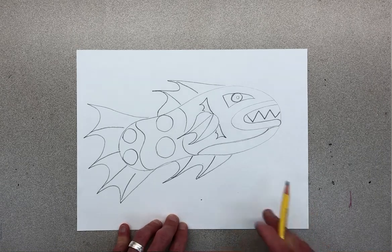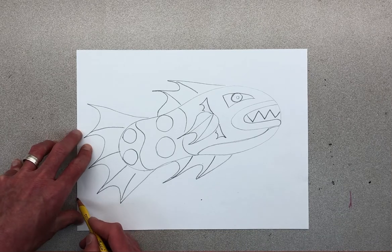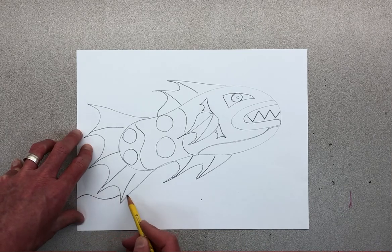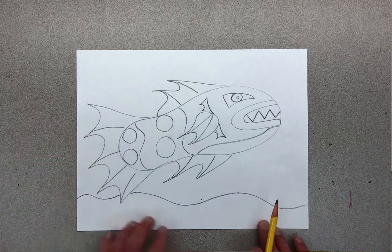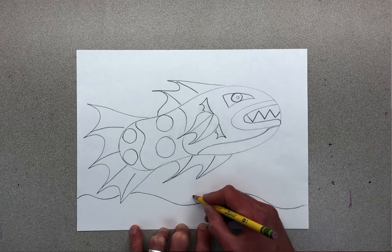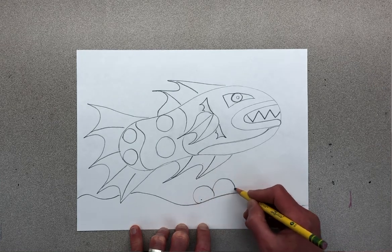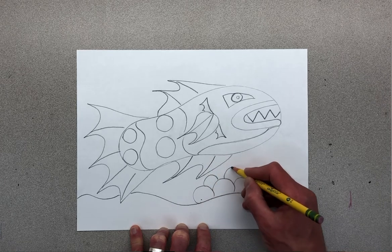Once you have the fish drawn, I would like you to draw some of the things that we talked about when we did skills of observation. I would probably start off with some sand, maybe I'm gonna do some rocks.